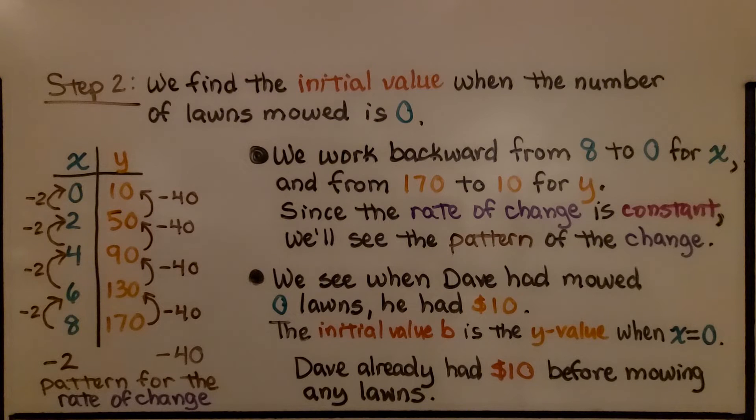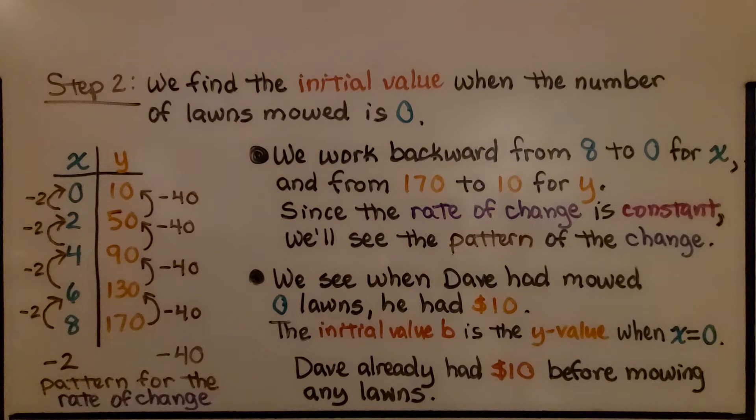Since the rate of change is constant, we'll see the pattern of the change. On this side it's minus 2, on this side it's minus 40. We see when Dave had mowed 0 lawns, he had $10. The initial value b is the y value when x equals 0. Dave already had $10 before mowing any lawns.